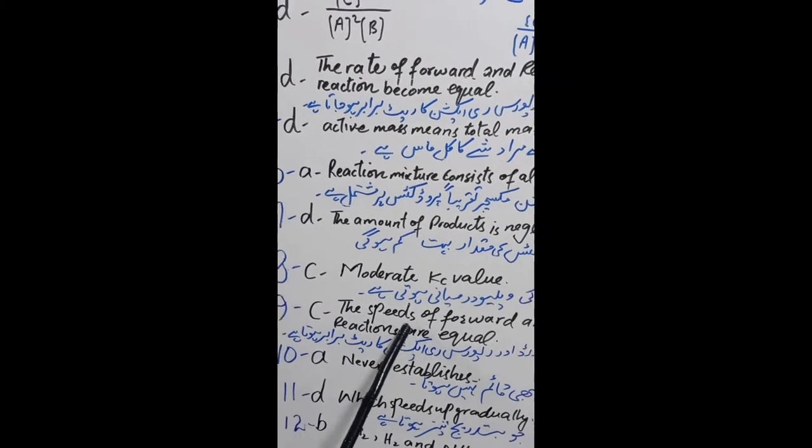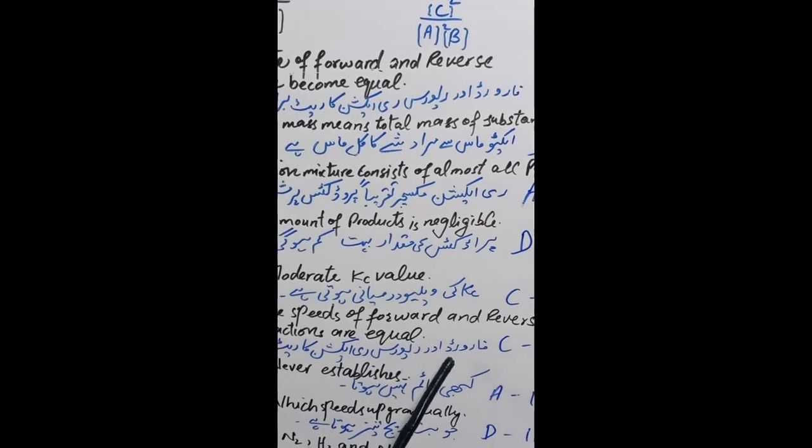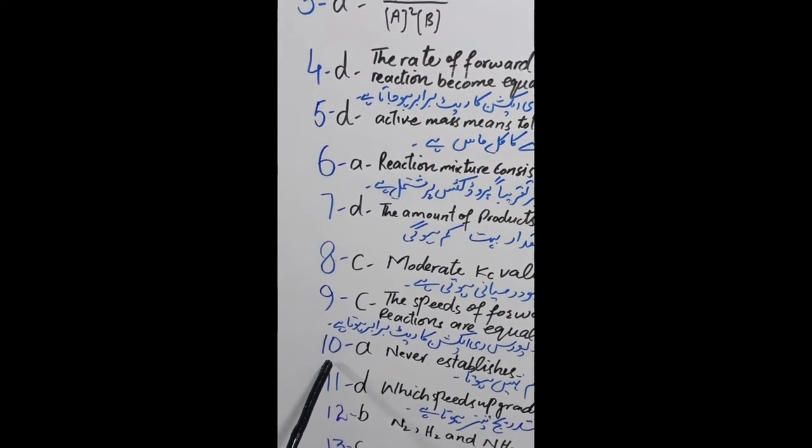Question 9: C. The speeds of forward and reverse reactions are equal. Answer C. Forward aur reverse reaction ka rate barabar hota hai.